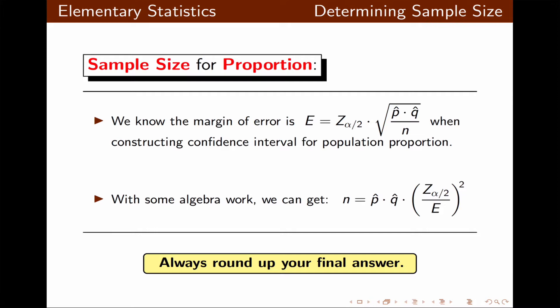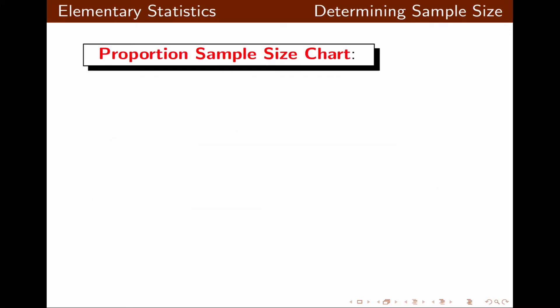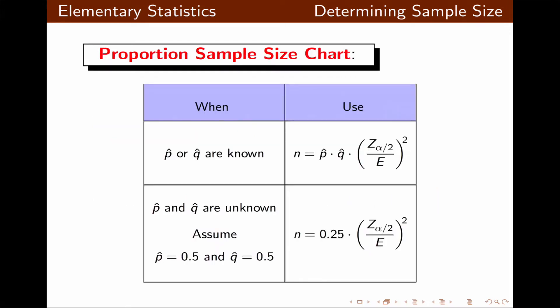We can use this formula to find the minimum sample size needed when working with proportion. Keep in mind we always need to round up when n is in decimal. This chart should simplify things: when P-hat and Q-hat are known, we use the formula just discussed. When P-hat and Q-hat are unknown, we assume P-hat is 0.5 and Q-hat is 0.5, and the formula becomes 0.25 times the quantity Z alpha over 2 over e, to the second power.